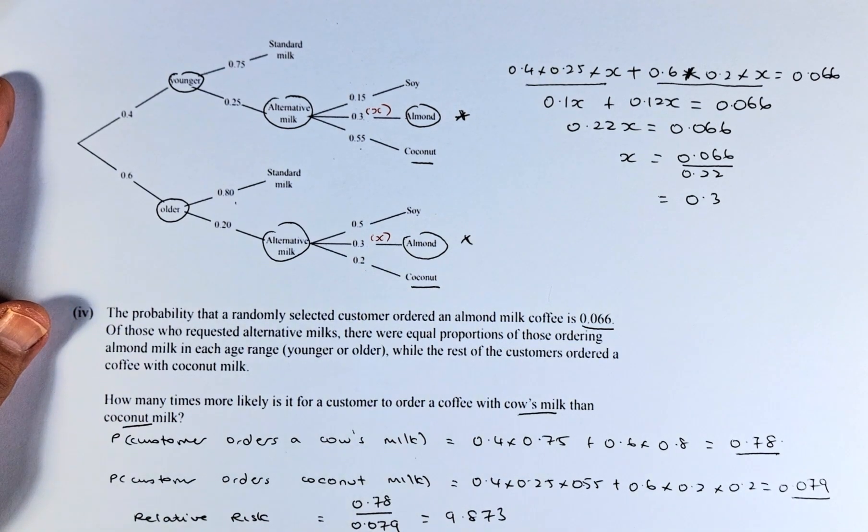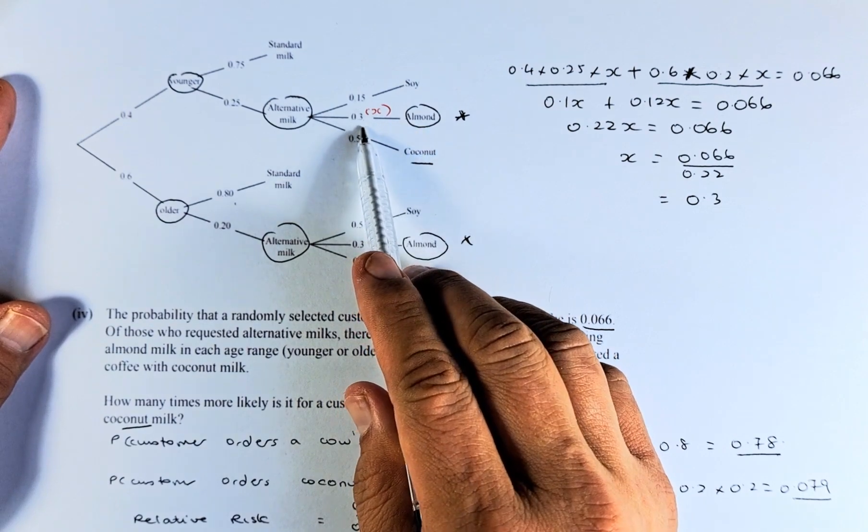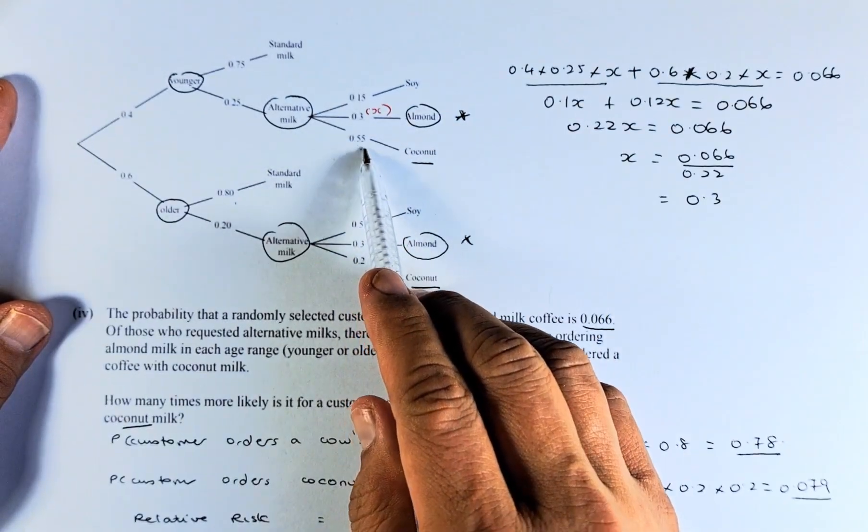So this is an excellent question. If you can solve this, first I'll repeat again. Calculate your x which is your almond. Once you found your x, you get the coconut value, the 2 coconut values.